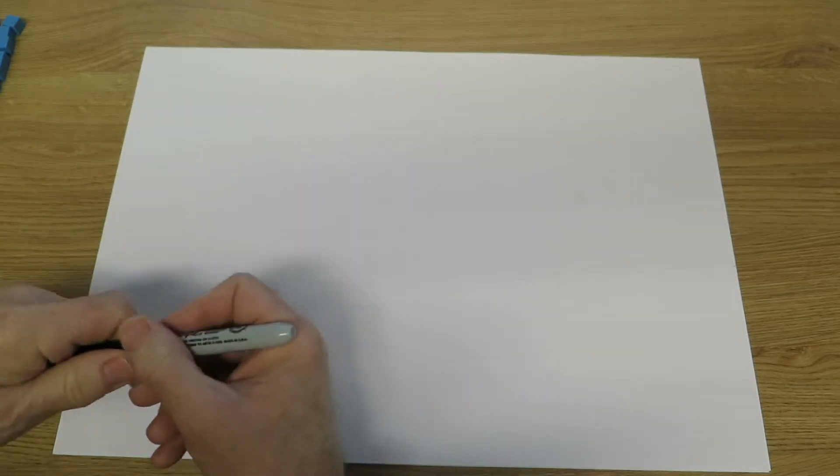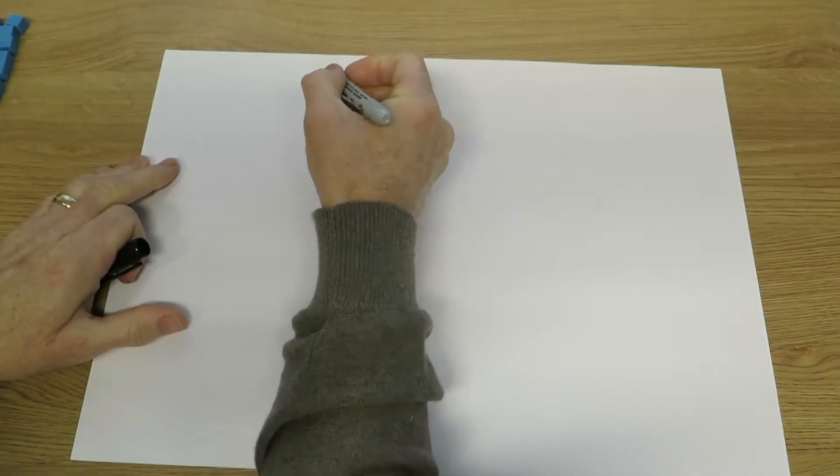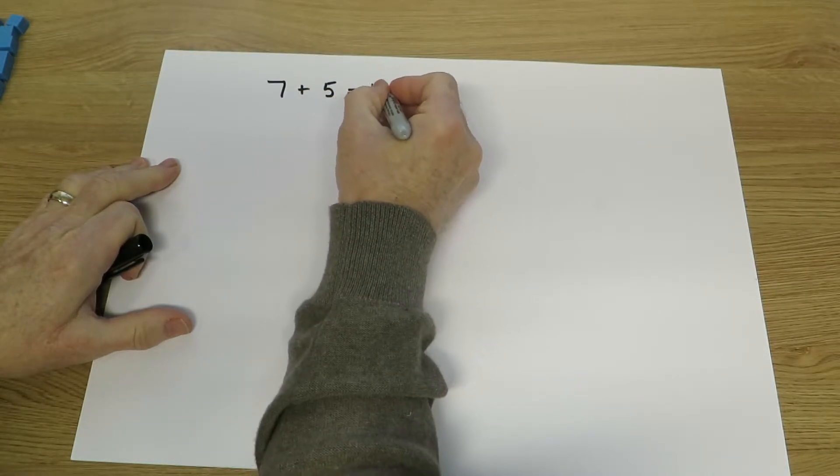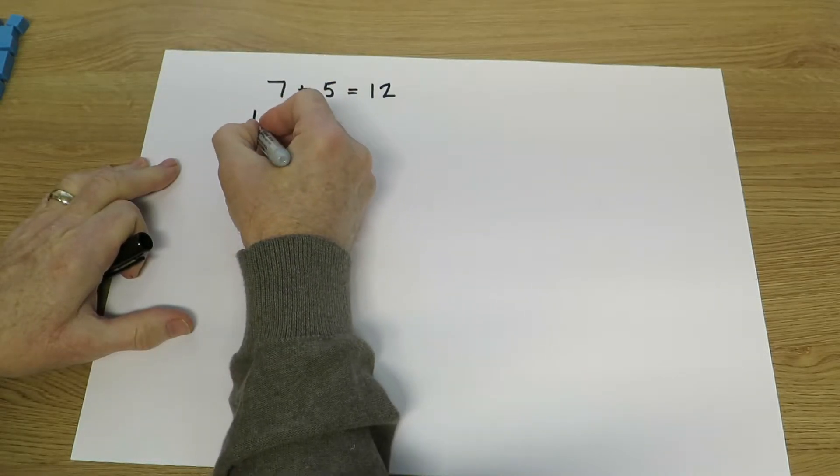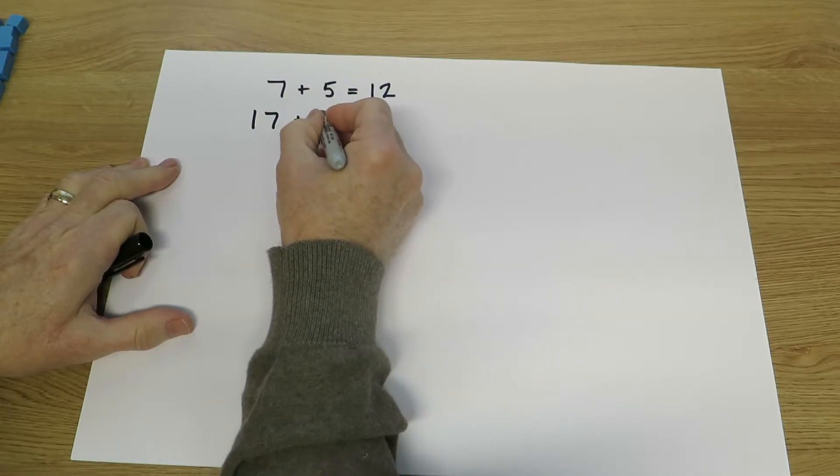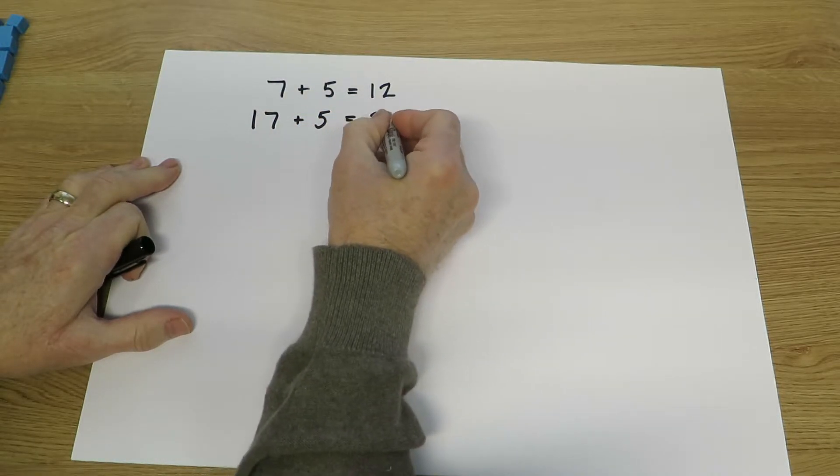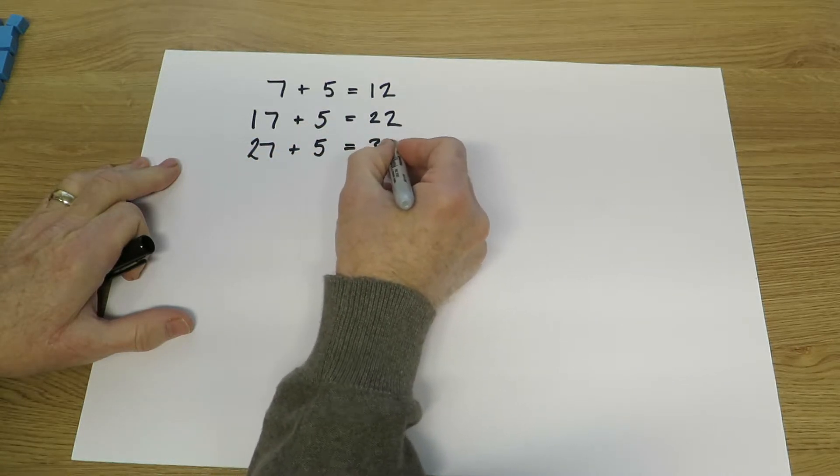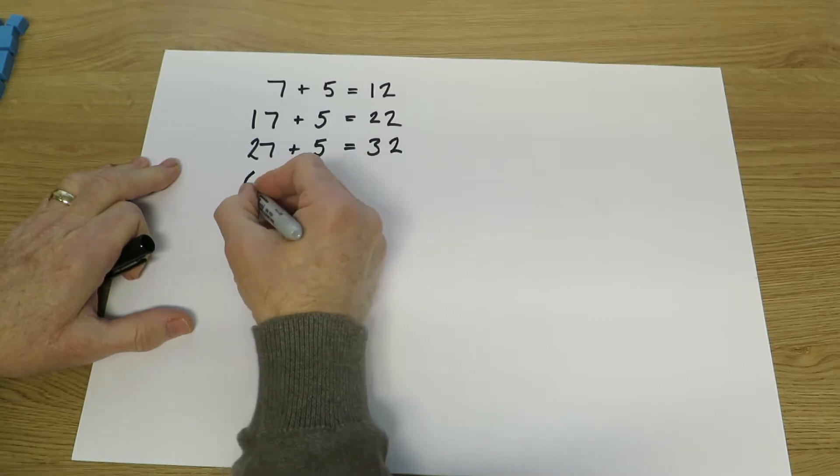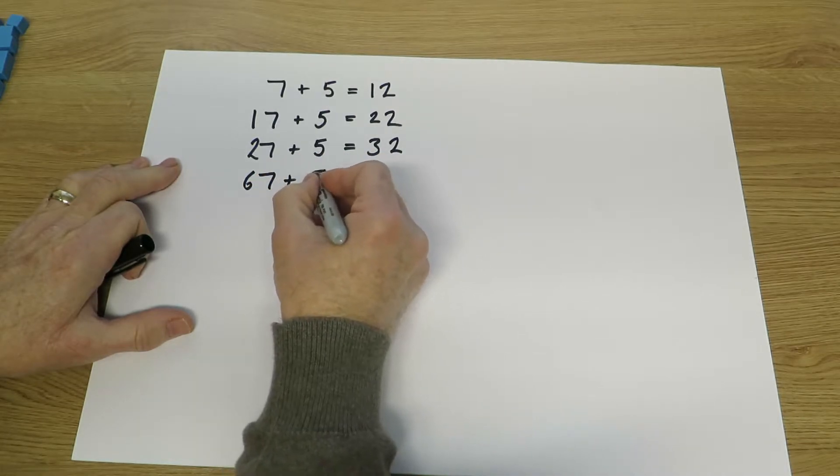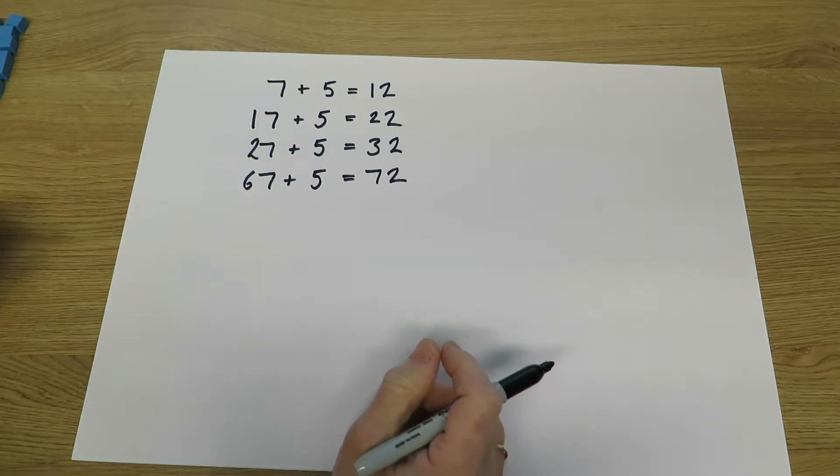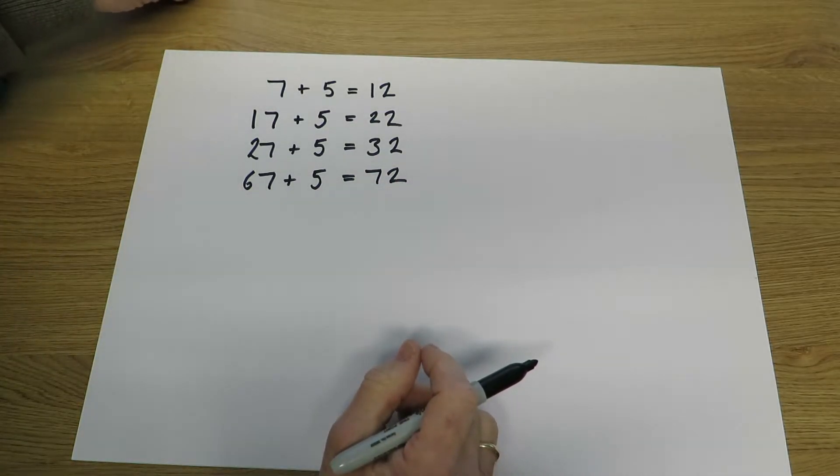So let's have a look at a few of these facts. 7 add 5 equals 12, and a related fact is that 17 add 5 must be 22, and 27 add 5 is 32, and higher up 67 add 5 must be 72. They'll do lots of practice using concrete objects again, units.